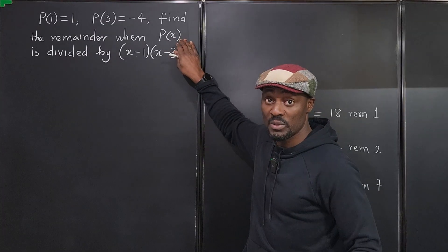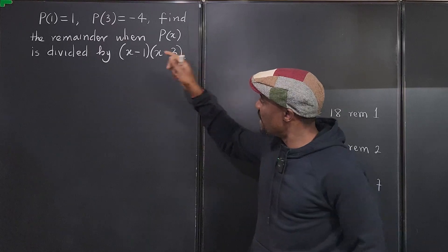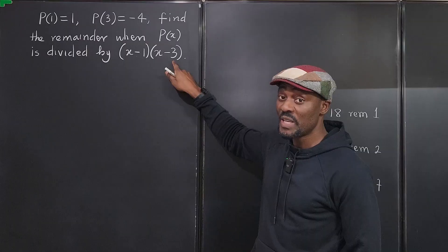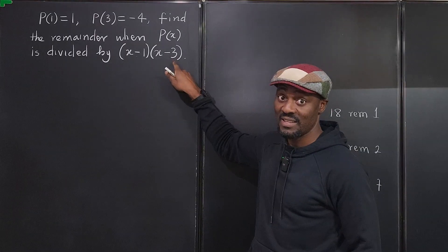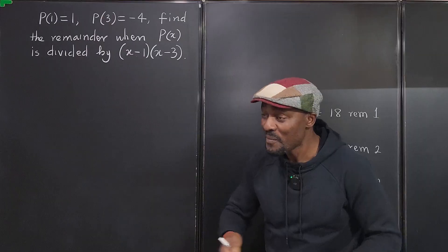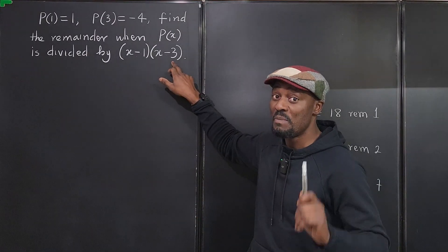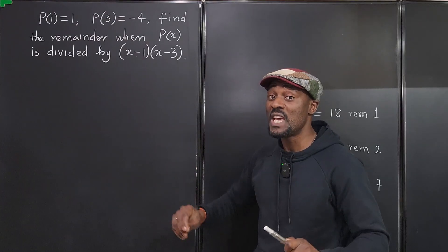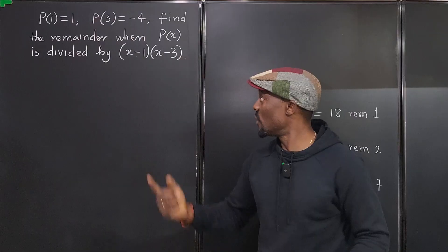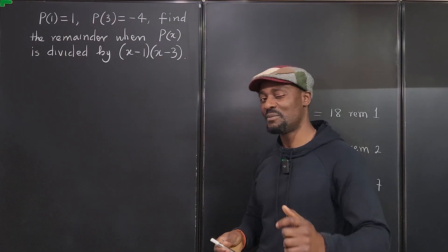We don't know the polynomial, but when we divide by this polynomial, whatever remainder we get must be less in degree than the divisor. Because the product (x-1)(x-3) is quadratic, the remainder is either going to be a linear polynomial or a constant. We don't know which, but that's what we're going to look for.